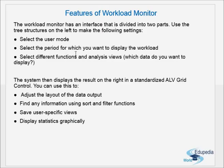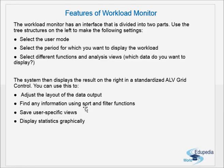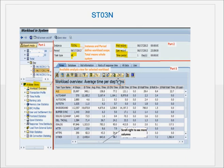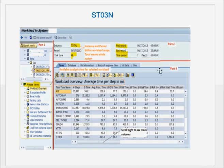First, select the user mode. Second, select the period for which you want to display the workload — day, week, month, or hourly. Third, in the analysis view, select which data you want to display: Workload Overview, Memory Stats, Spool, RFCs, and so on. The system then displays results on the right in the standardized ALV Grid Control. You can adjust the data layout, use sort and filter functions, save user-specific views, and display statistics graphically.